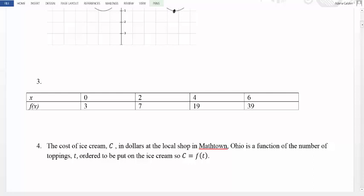Here the cost of ice cream C, in dollars at a local shop in Maftown, Ohio, is a function of the number of toppings T ordered to be put on the ice cream. So cost is a function of the number of toppings you decide to put on your ice cream. We know there's a relationship, and if we think carefully about it, it's likely that the more toppings you choose, the more expensive your ice cream becomes. But we can't know for sure because there's not enough information.